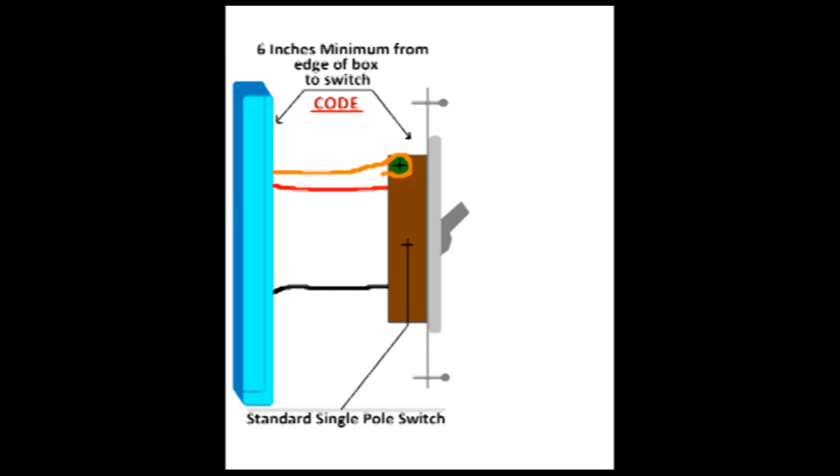This leaves you with one red wire and one black wire to be connected to a single pole switch and don't forget to ground it.